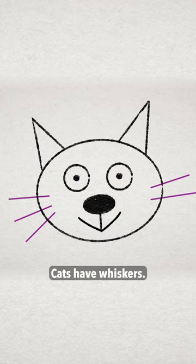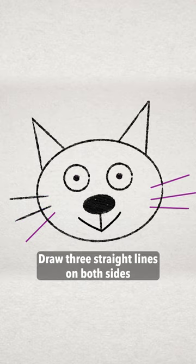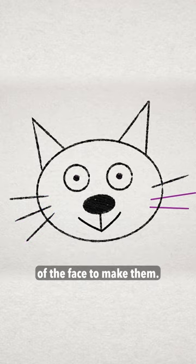Cats have whiskers. Draw three straight lines on both sides of the face to make them.